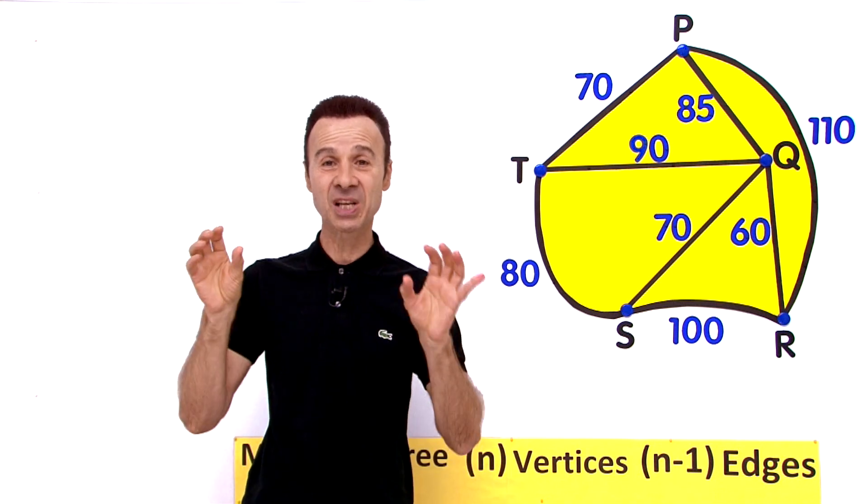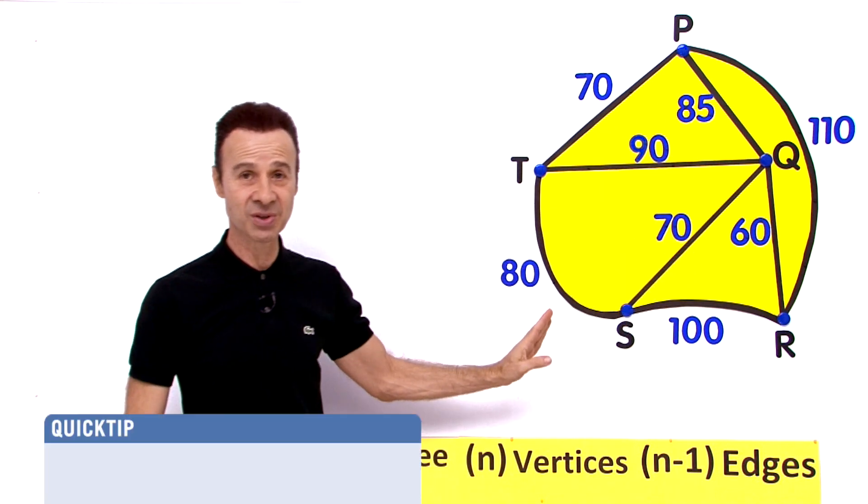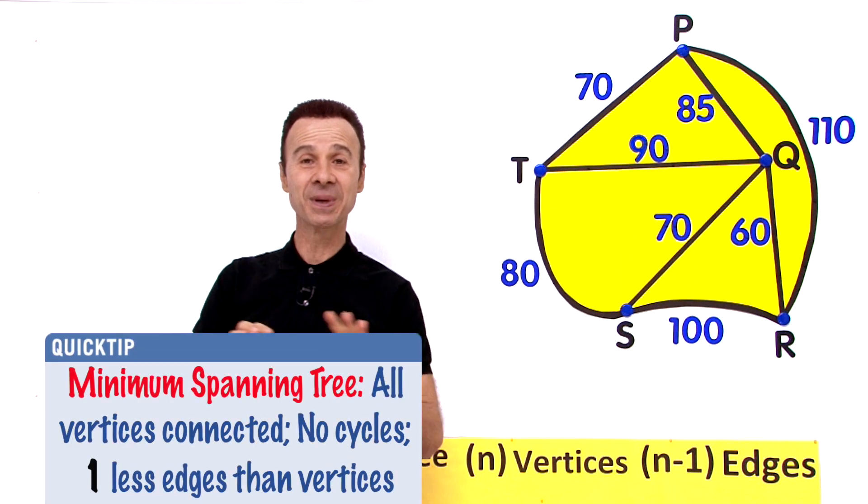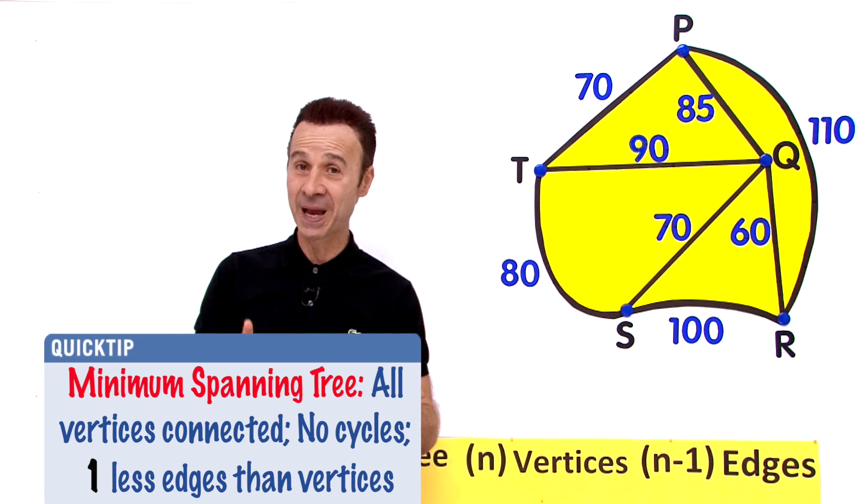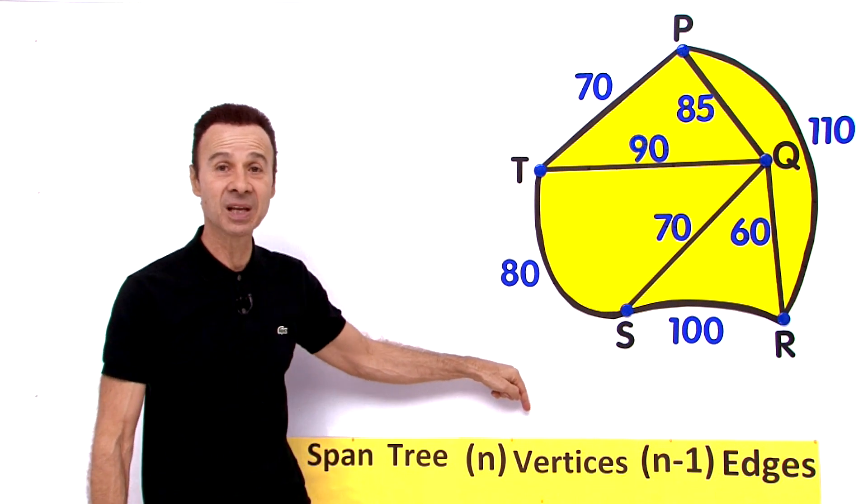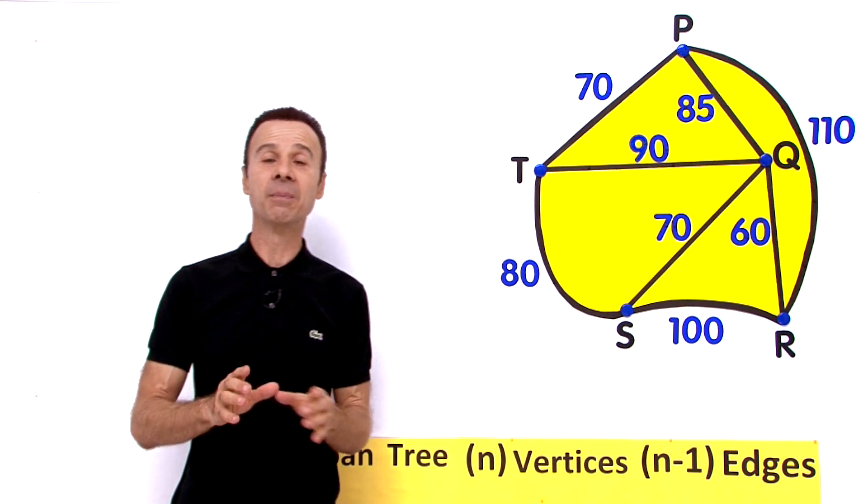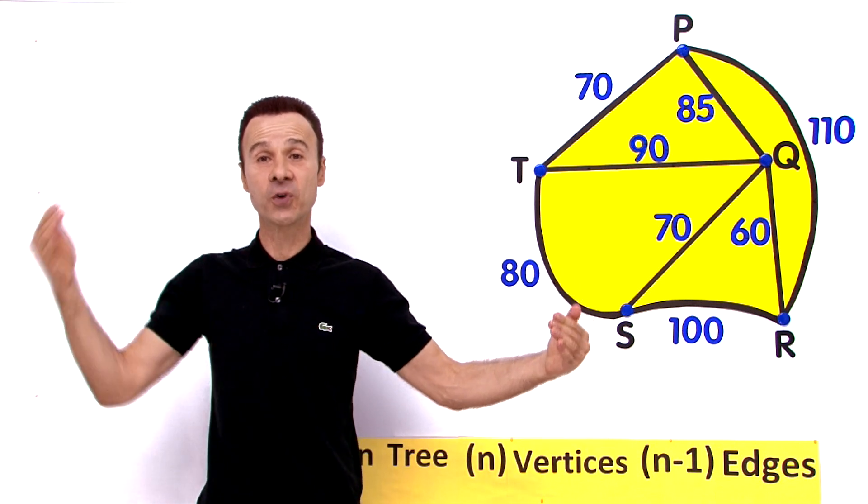Number two, all vertices must be included. They cannot be disconnected. If there are five vertices as there is in this example, all five must be connected on this spanning tree. And number three, for a minimum spanning tree, n vertices means we will have n-1 edges. It means there is always one fewer or one less edges than there are vertices.